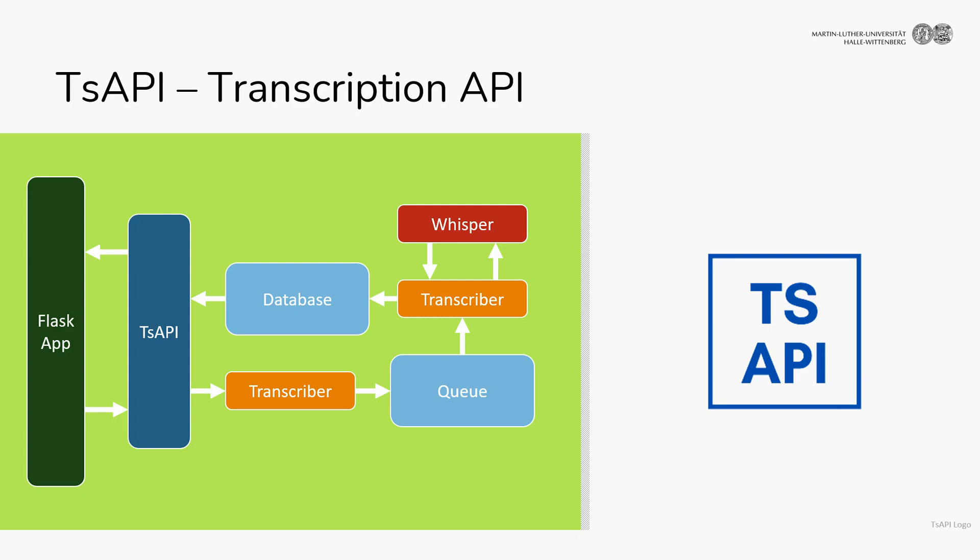Everything the Transcription API needs to resend results — for example, a VTT file — is in that one JSON file. You don't need to specify the format upfront; you send a GET request to the Transcription API specifying whether you need a TXT, JSON, VTT, SRT, or any other format that Whisper can return.